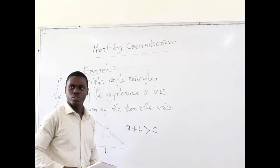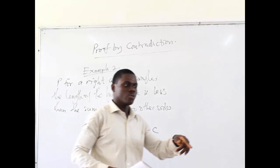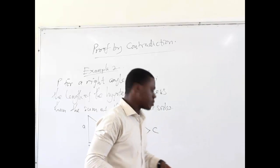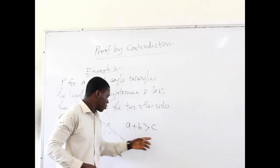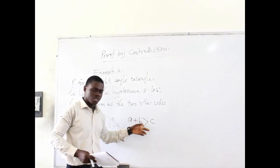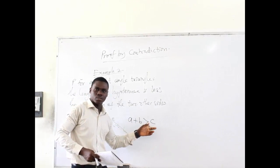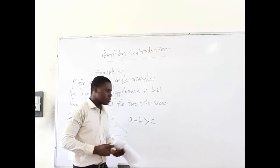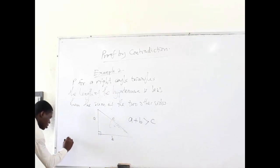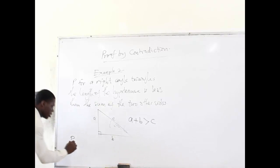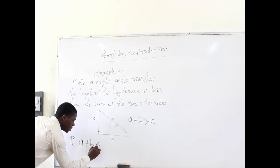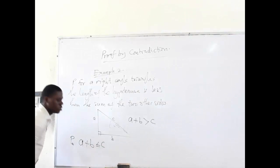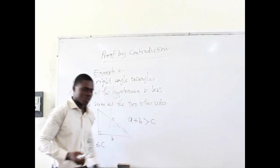We are doing this by contradiction. You will recall that in contradiction, you need to start with a negative statement. So the negation is going to be that A plus B is either less than or equal to C. Our negative proposition would be that A plus B is actually less than or equal to C.